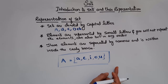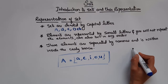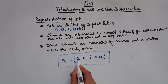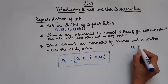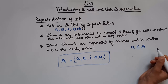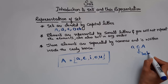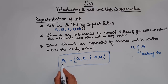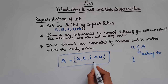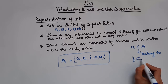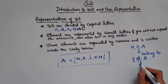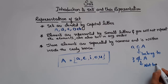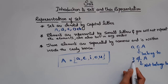One more thing to remember: if 'a' is an element of set A, we say 'a belongs to A,' and the symbol we use is ∈. So a ∈ A. Similarly, if Z is not present in set A, we write Z ∉ A, meaning Z does not belong to A.